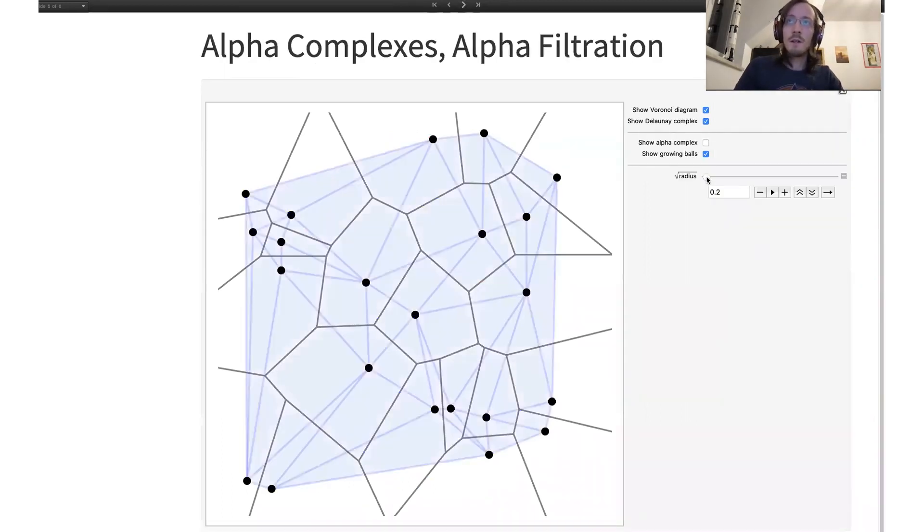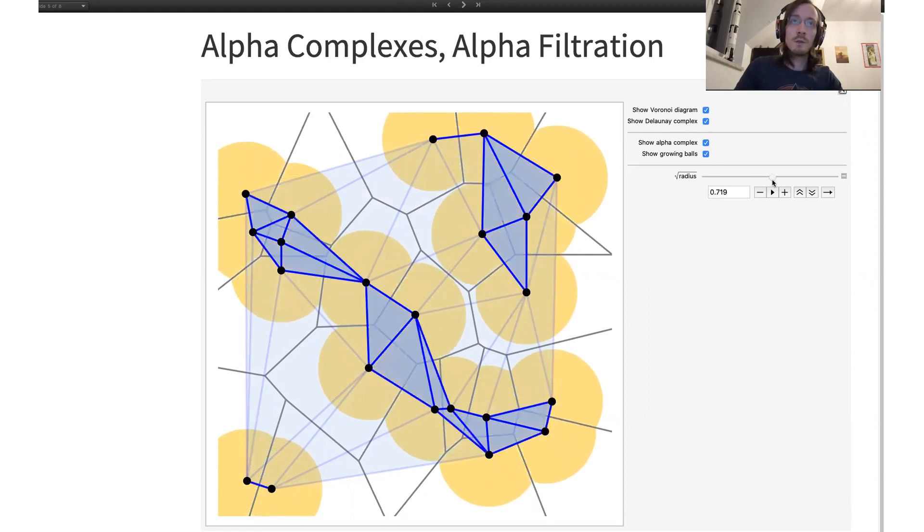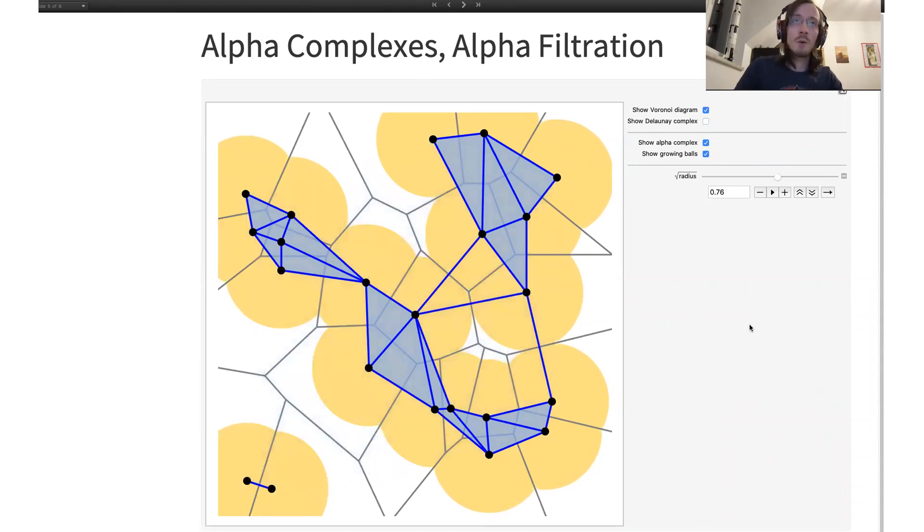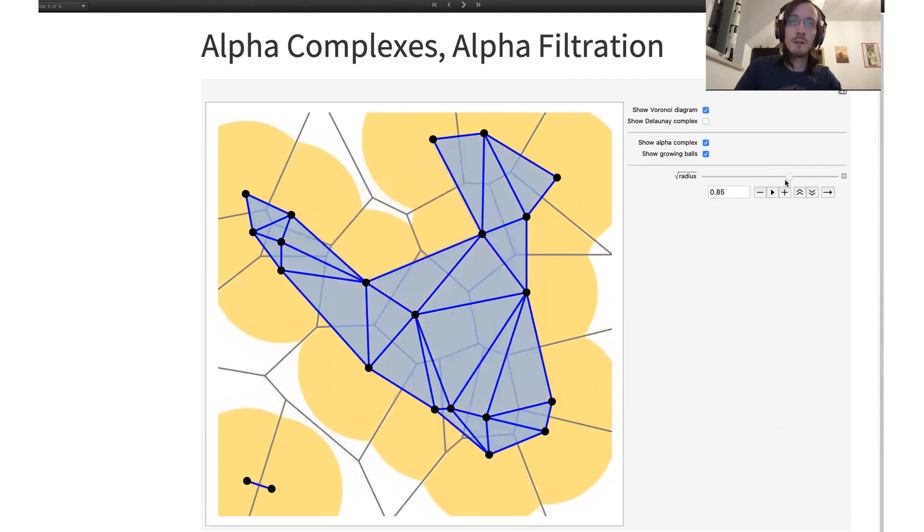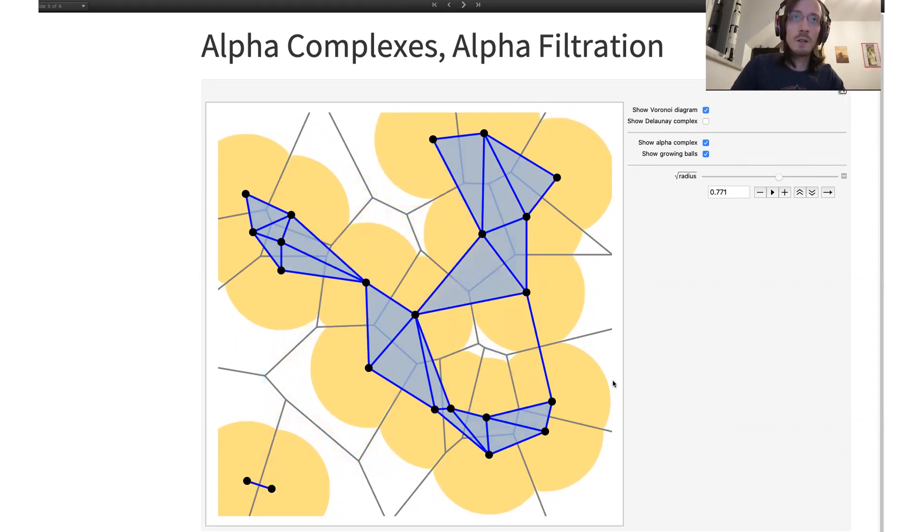Now to put it all together, recall the concept of growing disks. We can use these to filter the Delaunay complex. So for some given radius, we only take those edges and those triangles for which the corresponding disks already met. Now this is what we call alpha complex, and we really have a growing chain of these alpha complexes. Now what is nice is that, for example, here you can notice that the alpha complex has one hole just as the union of the disks, and also both of these objects have two components of connectivity. Now this is something that holds in general.